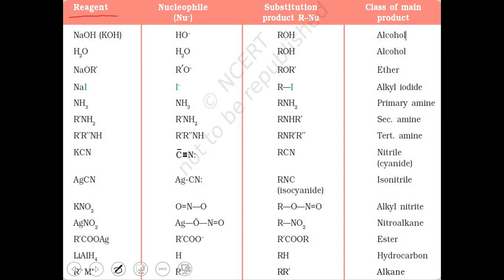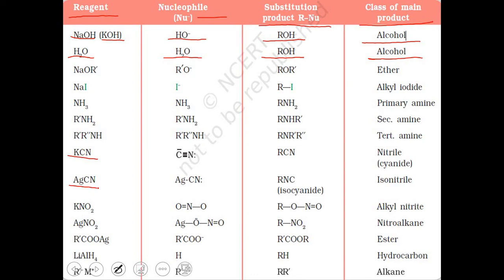Now we will see some important nucleophiles. This is an NCERT table present in your textbook. It gives you the reagent, the nucleophile provided by that reagent, the substitution product, and the class of the main product. For example, treating your haloalkane with NaOH or KOH provides OH⁻ as the nucleophile and the product is ROH, which is an alcohol. Similarly, treating with water provides H₂O as nucleophile and the product is again ROH.